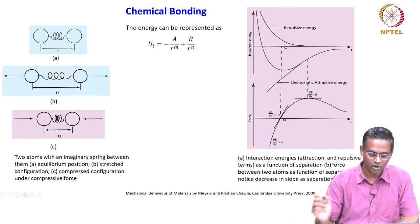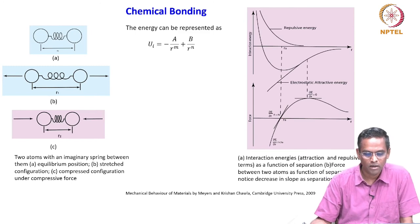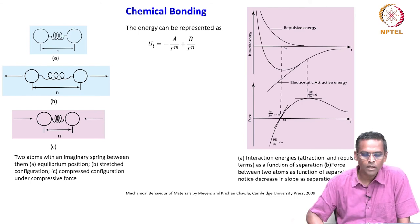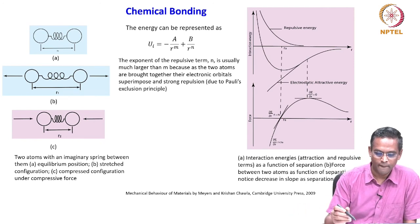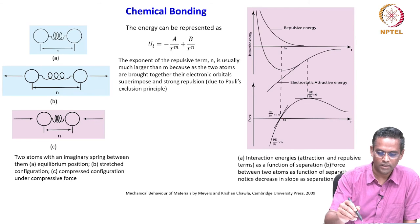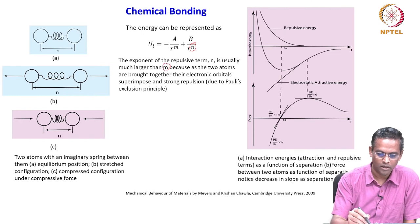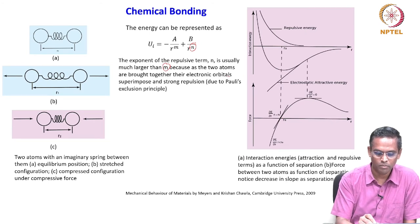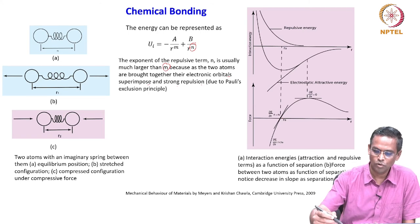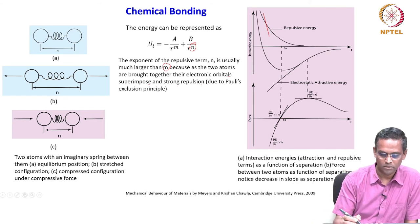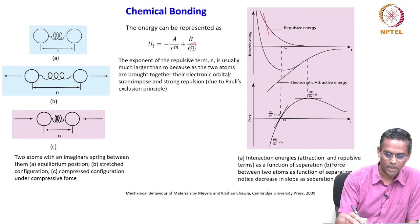The energy can be represented by the formula Uᵢ = −A/Rᵐ + B/Rⁿ, where the first term is attraction and the second is repulsion. The exponent of the repulsive term n is usually much larger than m. Because as two atoms are brought together, their electronic orbitals superimpose and there is a strong repulsion due to Pauli's exclusion principle. We are now trying to connect all of these.